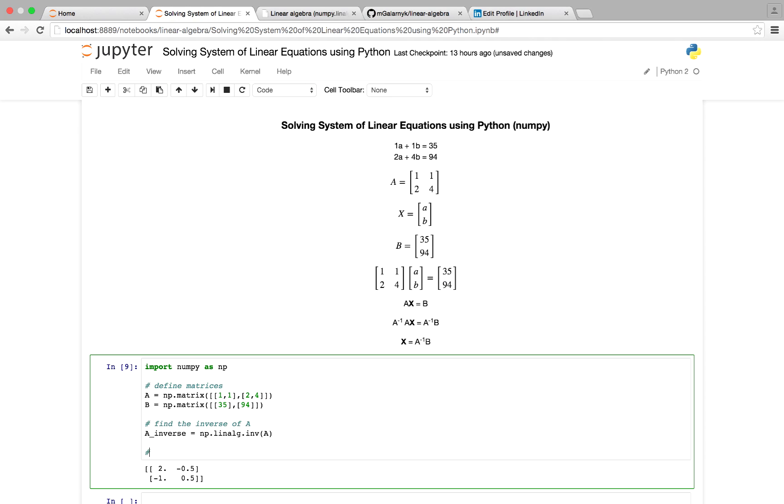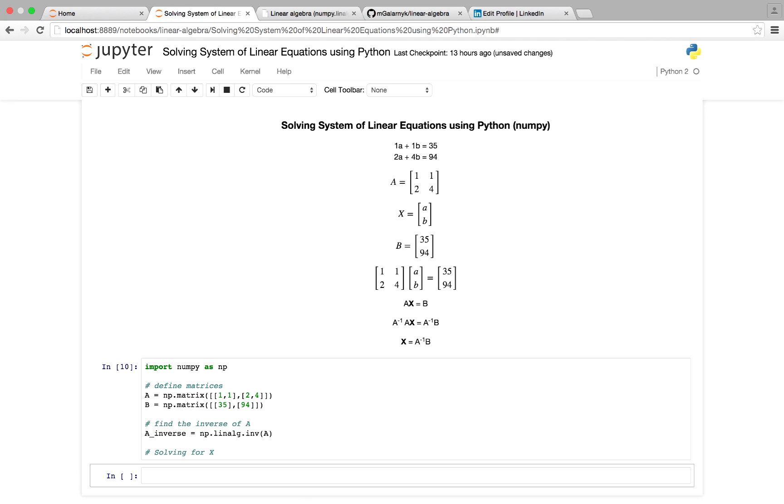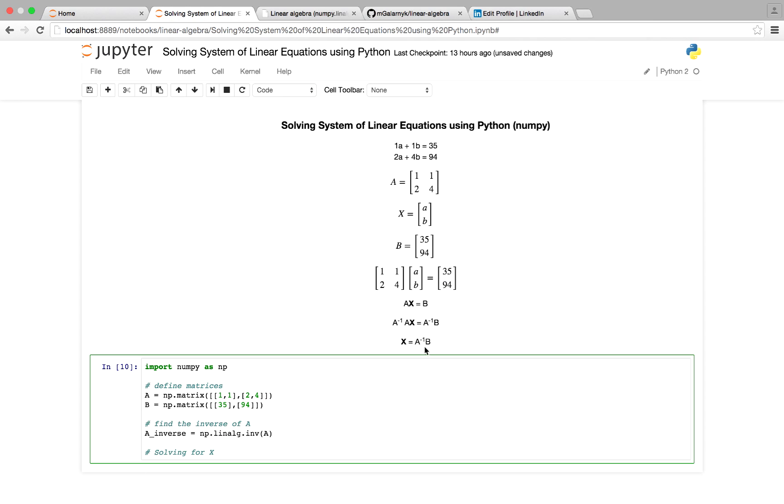And to find the solution to this problem, i.e. solving for x, all we have to do is, like before, have x equal to A inverse times B.